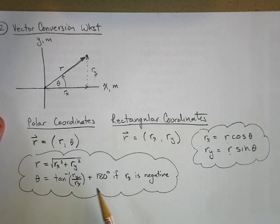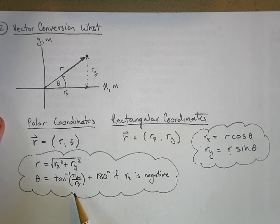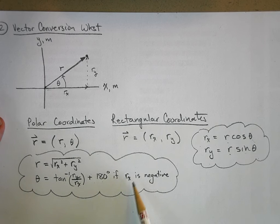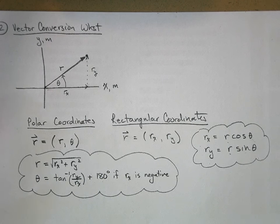I want to show you now why we have to add 180 degrees to our answer for inverse tangent if your x component is negative. And it's pretty easy to understand actually.